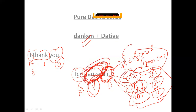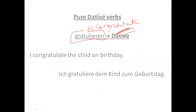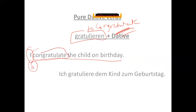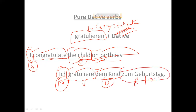Next is 'gratulieren,' meaning 'to congratulate.' For example, 'I congratulate the child on their birthday': 'ich' is nominative, 'gratuliere' is the verb, 'dem Kind' is the dative object, and 'zum Geburtstag' is the remaining part of the sentence.